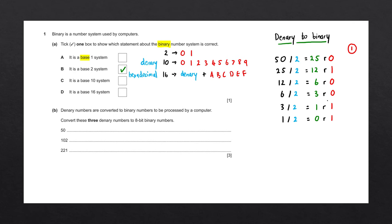To get the binary number, we read the remainders from bottom to top. The result is 1, 1, 0, 0, 1, 0. The question asked us to convert to 8-bit binary numbers, meaning our answers need to have 8 unique bits. Our answer at the moment only has 6 bits, so to turn it into an 8-bit number we simply add two zeros to the beginning. And there is the first part of the question solved.